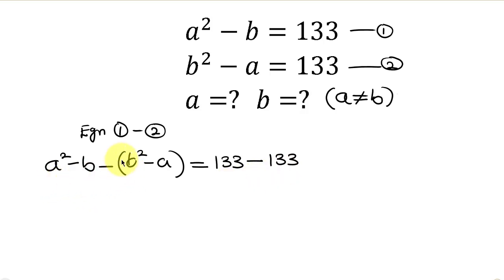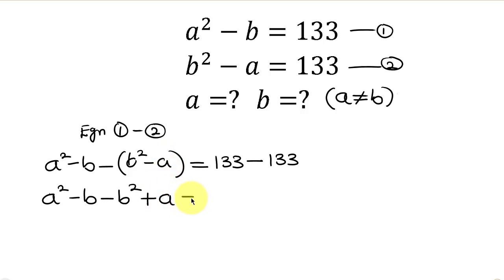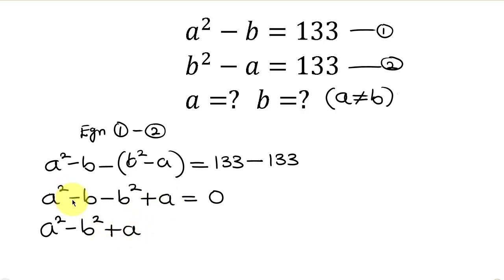Our next step will be to open up the bracket using the negative outside. So we have a squared minus b, then using this negative to open the bracket we have minus b squared, and minus times minus gives plus a. This is equal to 0, since 133 minus 133 is 0. Rearranging, we have a squared minus b squared plus a minus b equals 0.